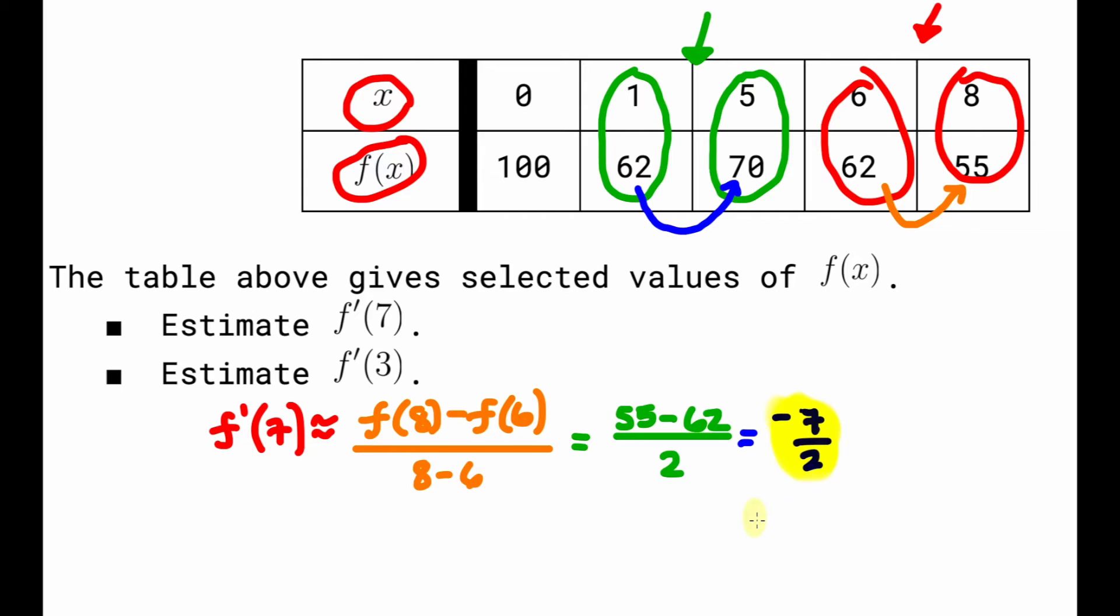Some common errors that students have made in the past is they mix up the x's and the y's. You have to make sure that you do change in y over change in x. Make sure you look at the table and notice how it's labeled x and f(x) to ensure you get that ratio in the correct order.